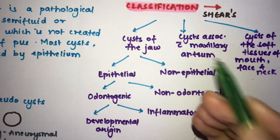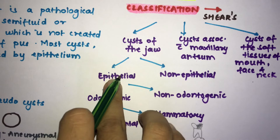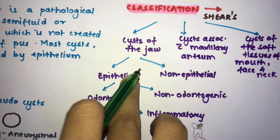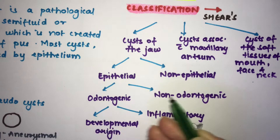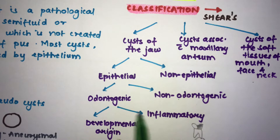Cysts of the jaw are further divided into two types: epithelial and non-epithelial. Epithelial cysts are the true cysts, and non-epithelial cysts are the pseudocysts. The epithelial group is again divided into odontogenic and non-odontogenic. Odontogenic means related to teeth, while non-odontogenic cysts are not associated with teeth but are still cysts of the jaw.